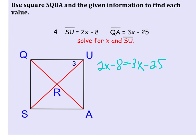Solve this for x. I'm going to subtract the 2x, which gives me negative 8 equals x minus 25. And then add 25 to both sides, so we get x equals 17.